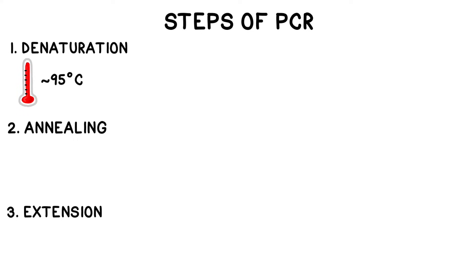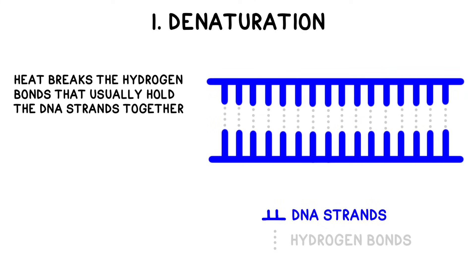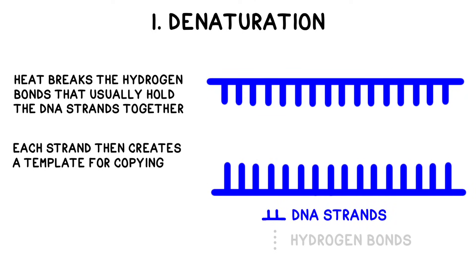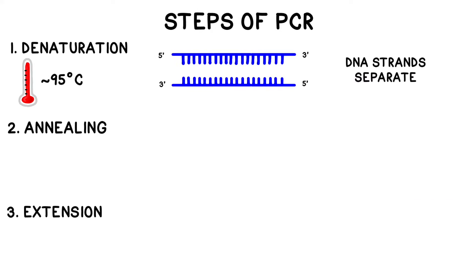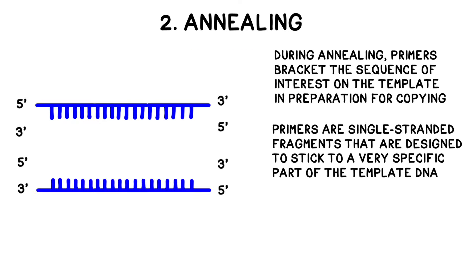During the denaturation phase, we heat the DNA to approximately 95 degrees Celsius, which is almost boiling if you're someone who uses Fahrenheit. This breaks the hydrogen bonds in the middle of the molecule and creates two template strands for copying. The second phase of PCR is annealing, which takes place at about 55 degrees Celsius, much cooler than the denaturation phase. During the annealing phase, primers flank the sequence of interest on the template molecule in preparation for copying.